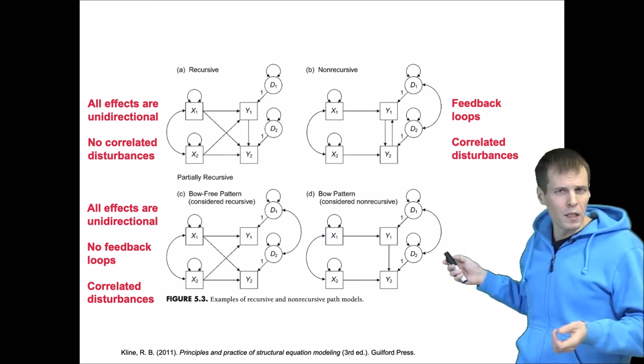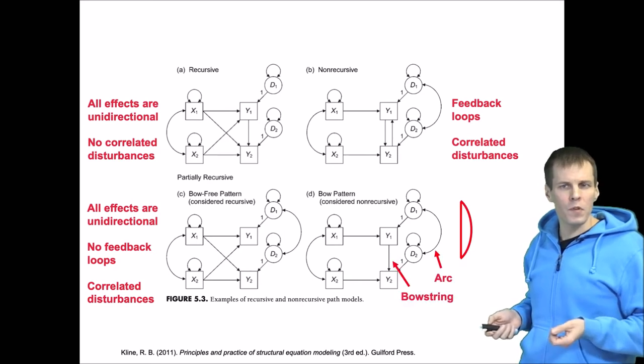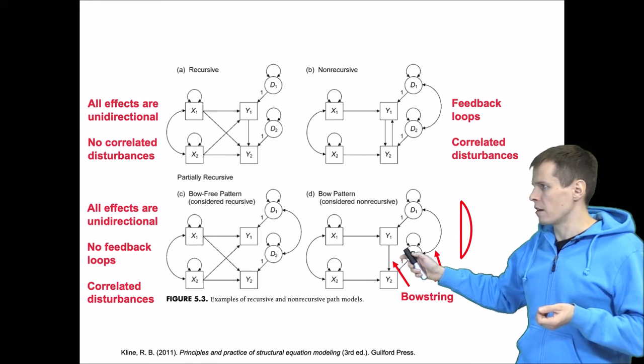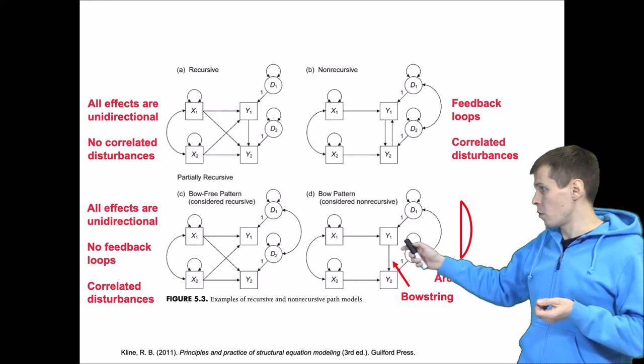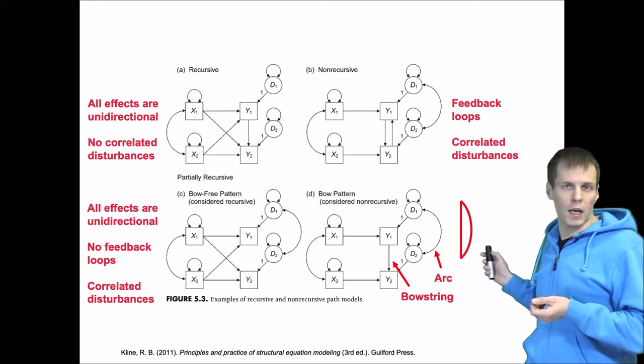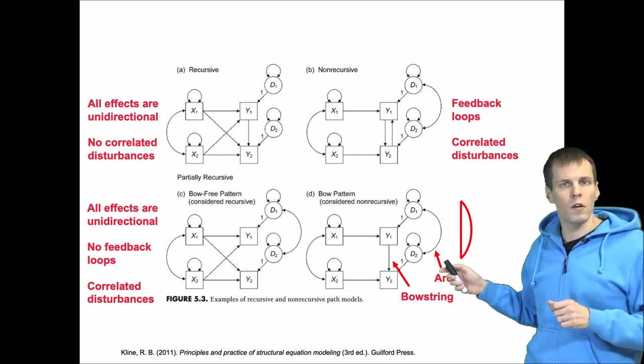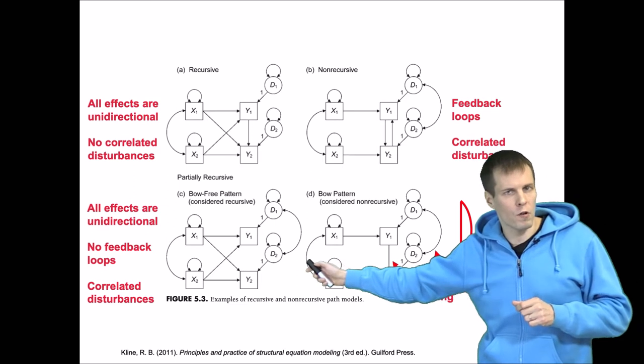So what does it mean that it is a bow pattern? The bow pattern is here: we have this arc and then we have this bow string. If you put the arc and the bow string together, then it looks like a bow that you would use in archery. So this is considered non-recursive and this is recursive.